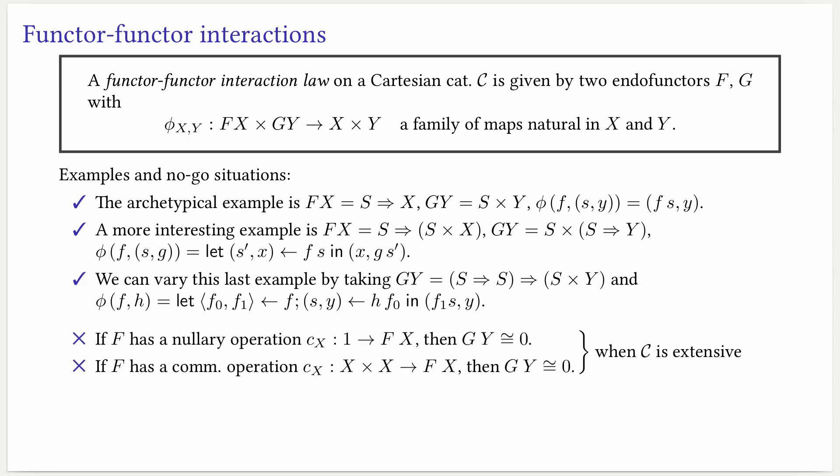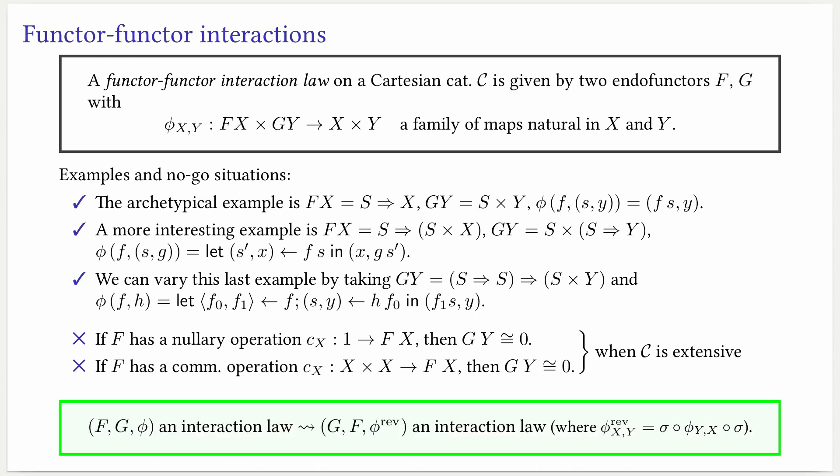At the same time, this definition has degenerate situations. Under the additional assumption that C is extensive, we can prove that if f has a nullary operation — that is, a family of maps from the terminal to f which is natural on x — then any functor g interacting with it must be zero. Something similar happens when f has a binary commutative operation. This definition is actually quite symmetrical, and we can swap the roles of f and g. So if f, g, and phi is an interaction law, we get another one by using the symmetry of the product before and after phi.